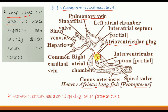Urodele amphibians have an atrium which is partially divided by an interatrial septum. The right atrial chamber and the left atrial chamber are separated by this interatrial septum. There is a perforation which is called the foramen ovale.